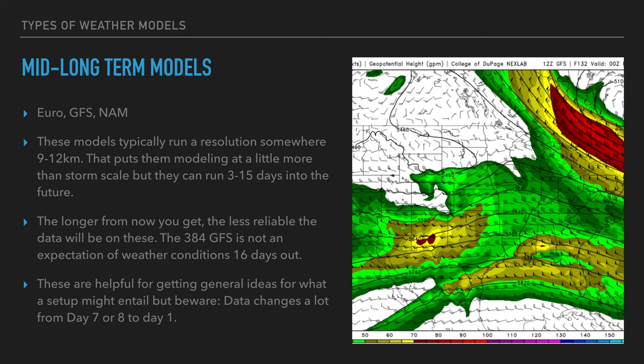As a general practice, don't expect a setup to get better as you approach the event — that's very rare. The more general trend is for a day to look amazing at day seven, then just average by day one. Models have a bias in the later stages to producing bigger days, and as data clarifies, days typically look worse as you get closer. When you see me talking down about a day seven days out, it's because it only looks good and the odds of it being worth chasing aren't great.